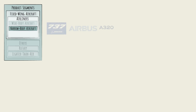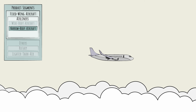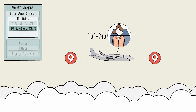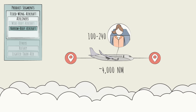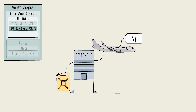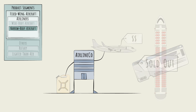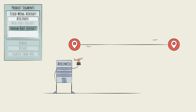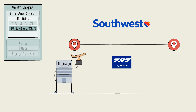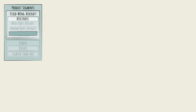The next airliner segment is the narrow-body aircraft, like the Boeing 737 and the A320. These carry a smaller load — more like 100 to 240 passengers — and fly shorter missions, closer to about 4,000 nautical miles max. Airlines, the buyers of these products, often prefer these narrow-body aircraft. They're more fuel-efficient and are easier to fill to capacity. Running more, shorter routes has been a winning strategy for airlines like Southwest, which exclusively flies the 737.